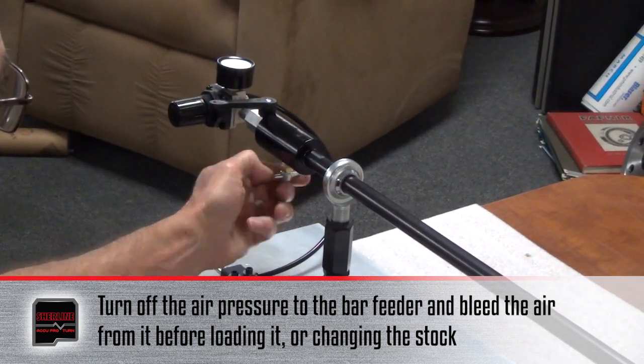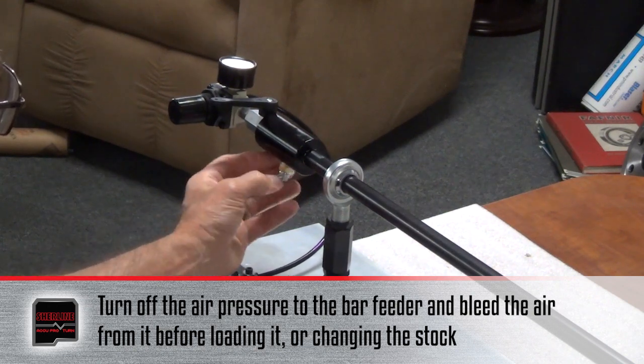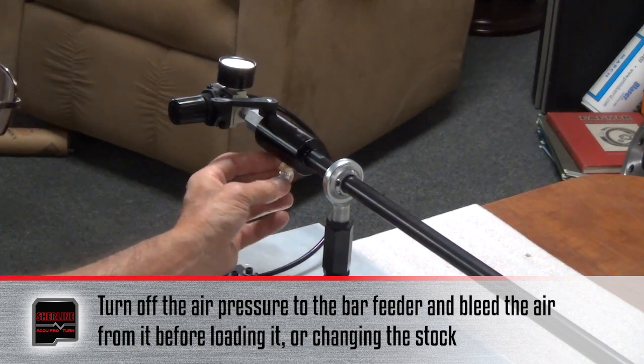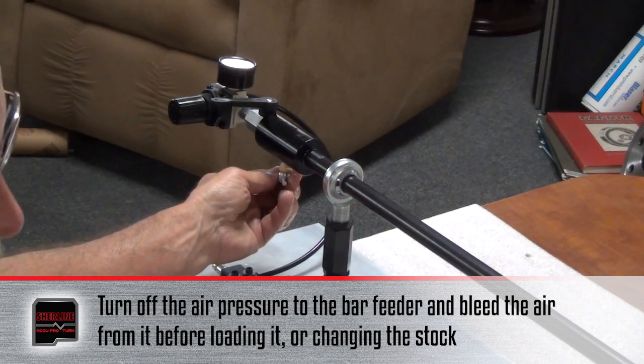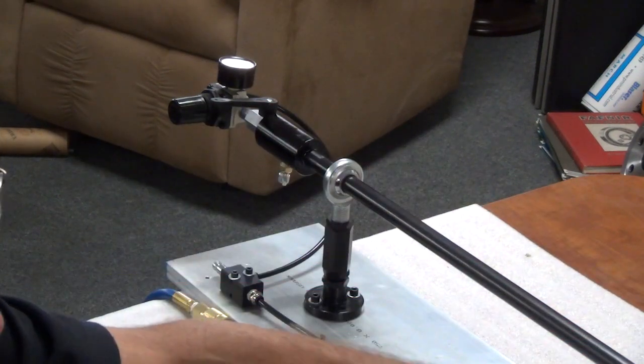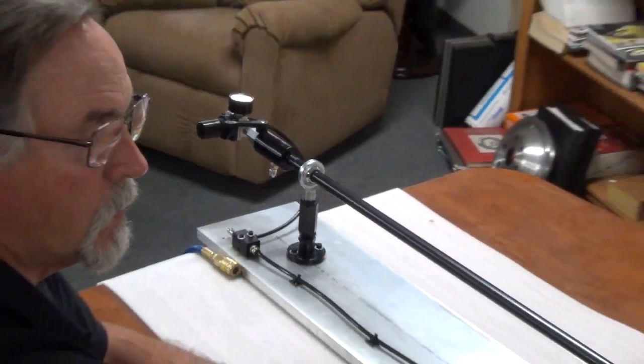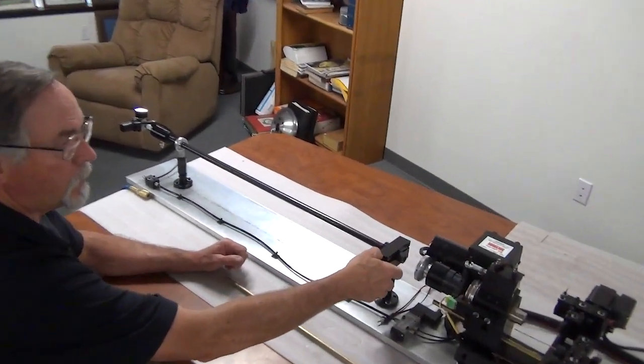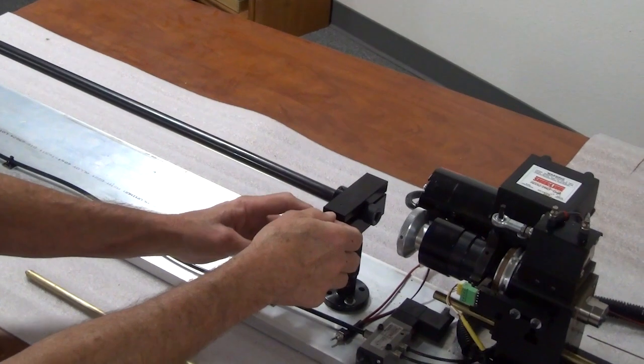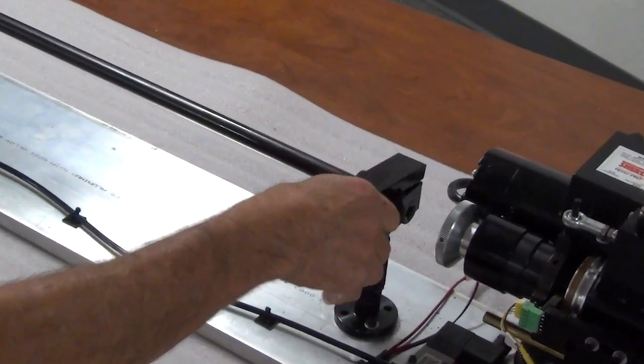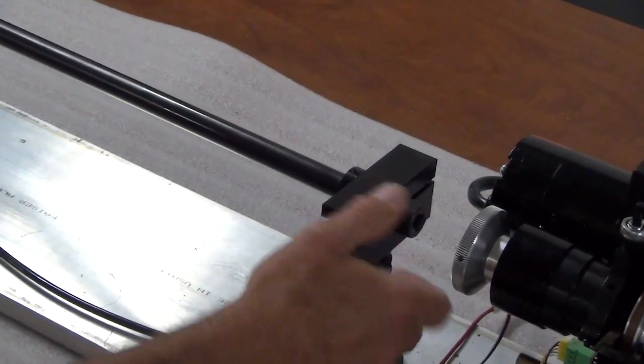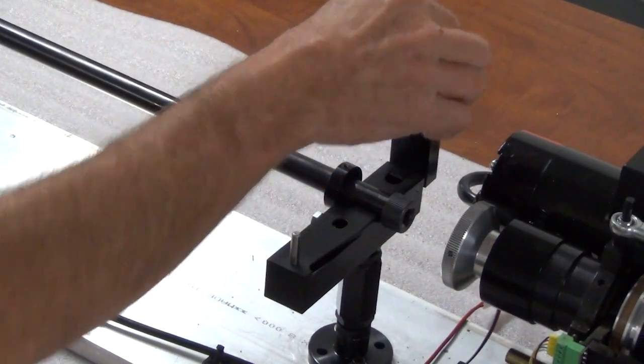And the next thing is we have a bleeder valve on the bottom and you have to turn it several turns and then you'll actually hear the air release out of it so there's no pressure inside the tube at all. Next you lift the top clamp and there's a spring-loaded ball nose set screw in there to keep this locked in place. So you just lift it up, pull it out of the way.